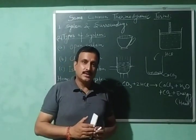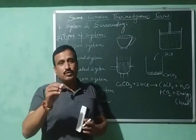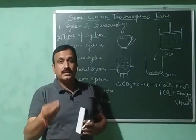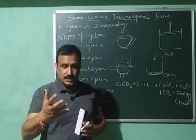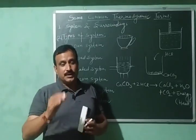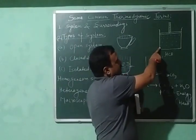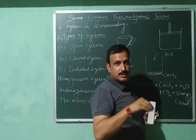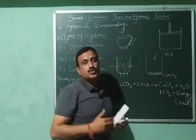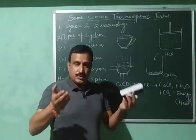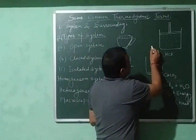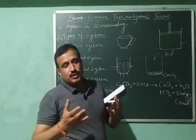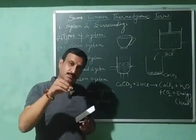Boundaries could be real or imaginary, but they are very important. If we want to study the effect of pressure, volume, or temperature on the system, that effect is studied through these boundaries. For example, if I want to increase the pressure on the system, I press the piston downwards — so the effect of pressure is studied through the boundary. Similarly, if I want to increase the temperature of the system, heat is absorbed by the system through its boundaries. So the effects of temperature, pressure, and volume are all studied through these boundaries.